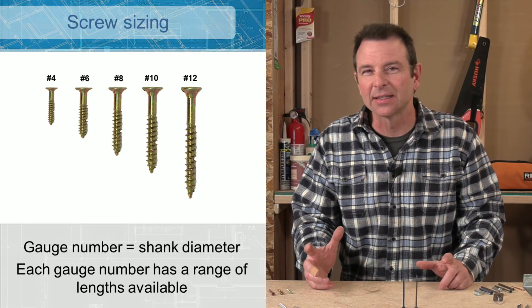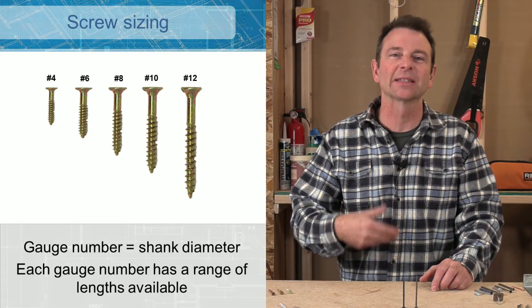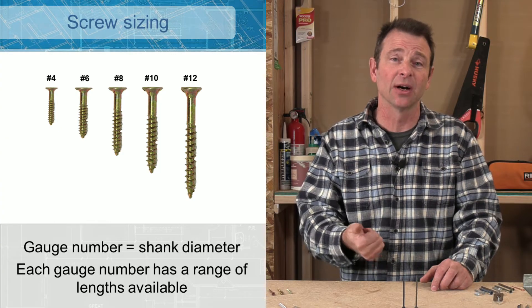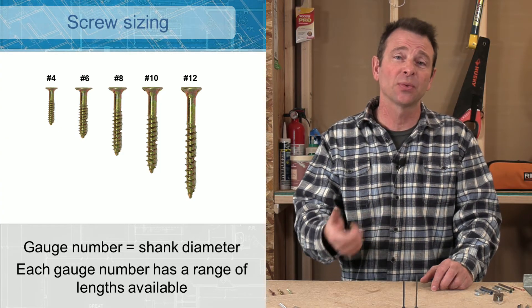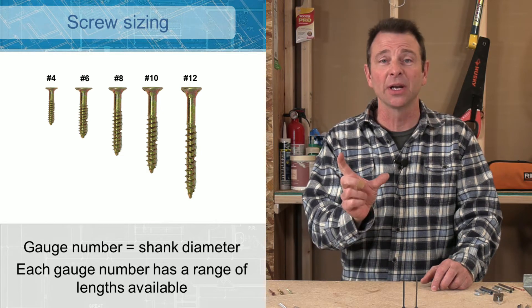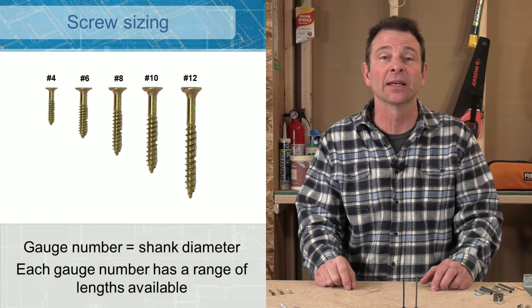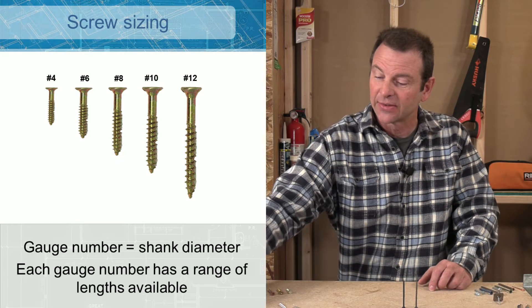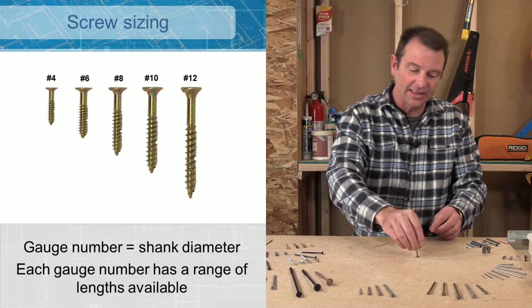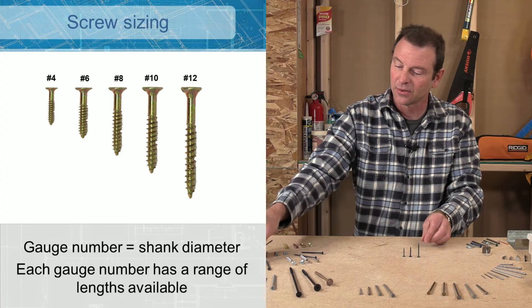Screw sizing is a lot different than nails and screws will be called out in numbers. Number 4, number 6, number 8. This will call out the shank diameter of the screw. The difference between nails and screws are that you could have a number 4, but there will be a range of different lengths within that gauge of screw shank. And you can see here, I've got several number 6s. And if I line these up, they run a range all the way up to, I've got three quarters all the way up to probably two inches.